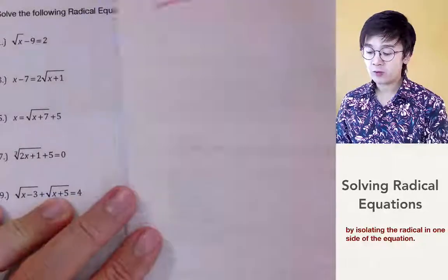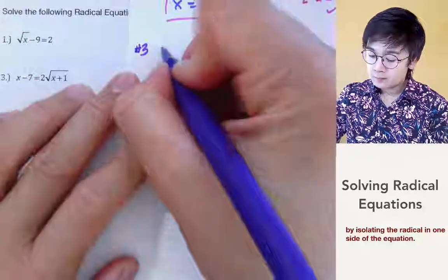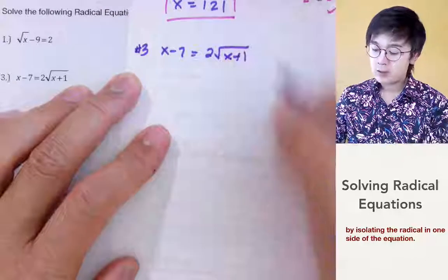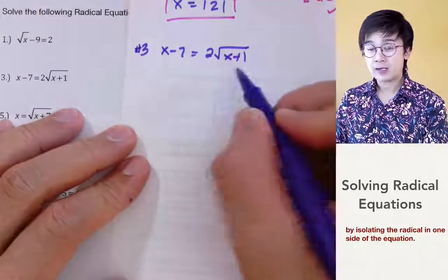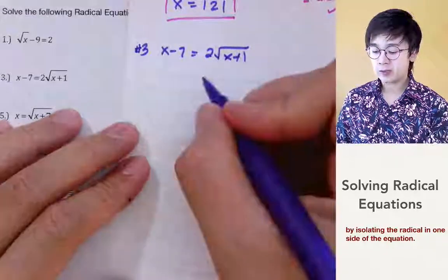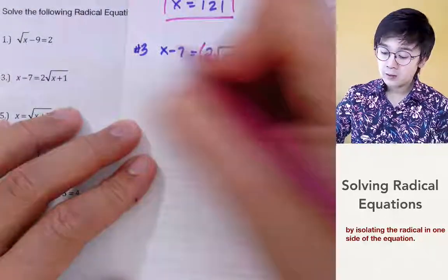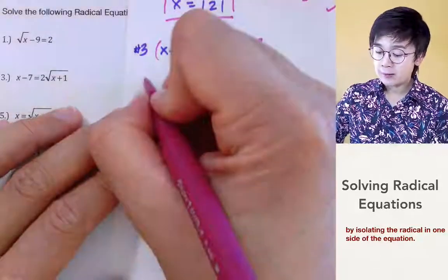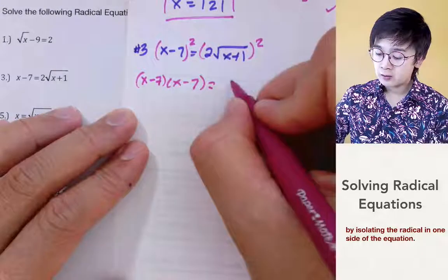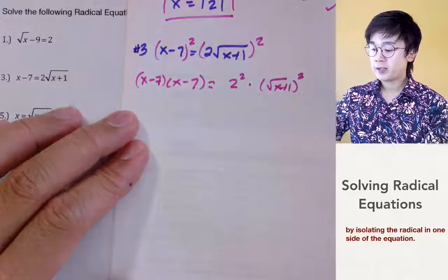Now let's try problem number 3. Since we have a radical on one side of the equation and x minus 7 on the other, we don't need to divide — that would make the equation more complicated. So what we're going to do is square both sides. We'll end up with x minus 7 times x minus 7 equals 2 squared times square root of x plus 1 squared.